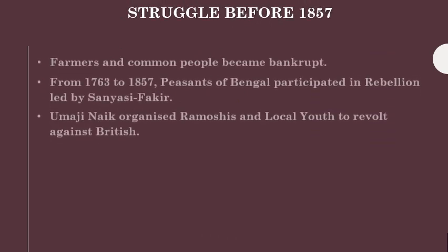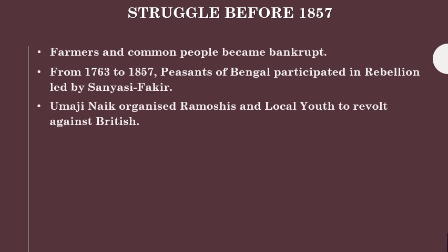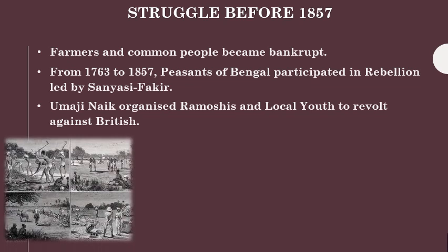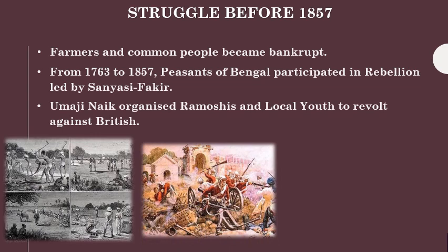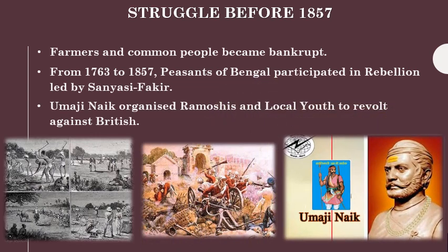Let us study about the struggle before 1857. The local people in India had to bear the ill effects of British government. Indians started feeling that they were exploited due to the company's rule. Farmers and common people became bankrupt during the company's rule. From 1763 to 1857, the peasants of Bengal participated in rebellions. Umaji Naik also gave a strong fight — he organized Ramoshis and local youth to revolt against the British.